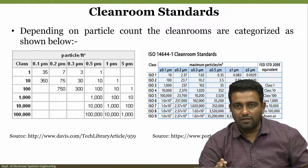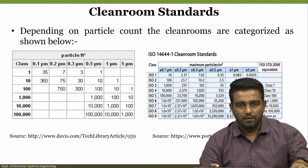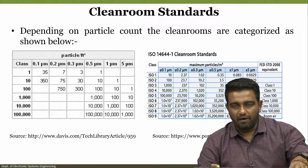Depending on the particle count, clean rooms are categorized as shown in the slide. They are categorized based on particles per cubic foot, ranging by particle sizes of 0.1, 0.2, 0.3, 0.5, 1, and 5 microns. Class 1 is cleaner than class 10, class 10 is cleaner than class 100, and class 100 is cleaner than class 1,000 to 10,000 to 100,000.